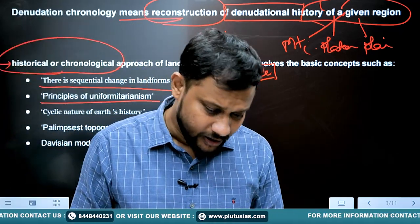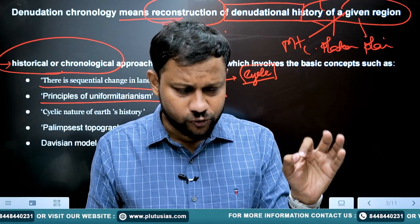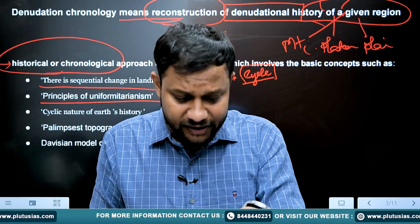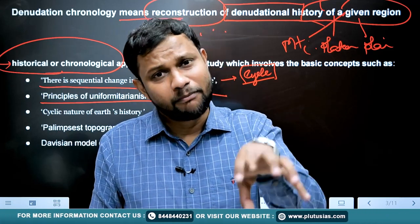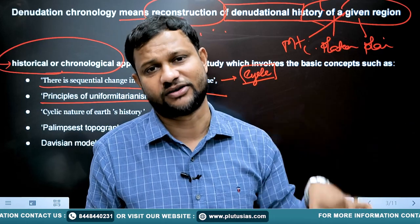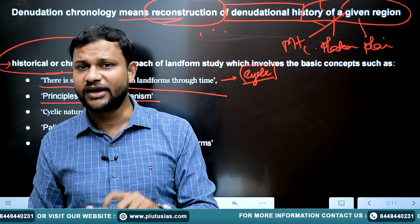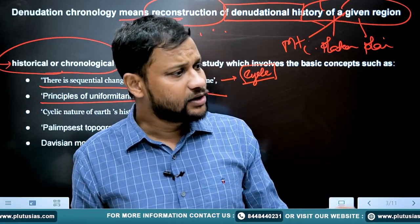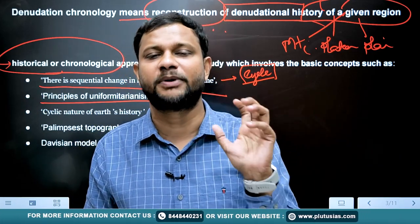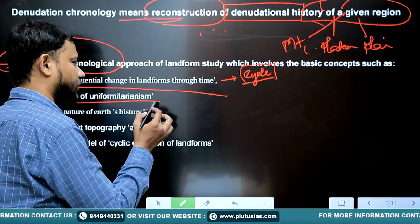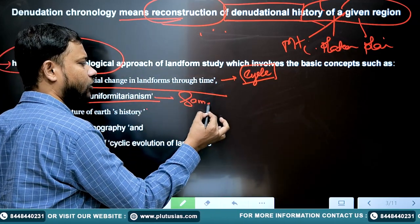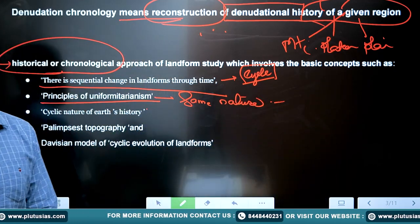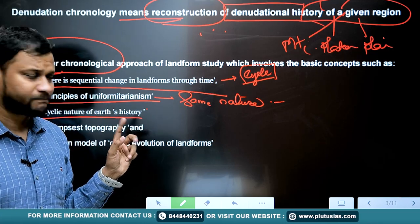The second founding principle is uniformitarianism, which means that the processes operational today over a landform must have been operating in the past as well. The intensity or the nature of the influencing factor may have differed, but the same nature of geological processes was operational. The third principle is the cyclic nature of earth history.